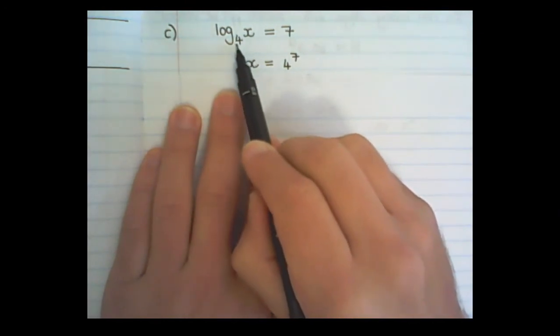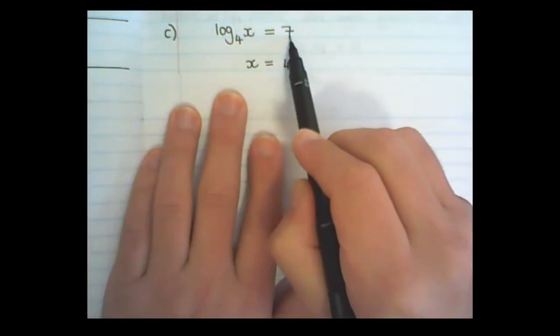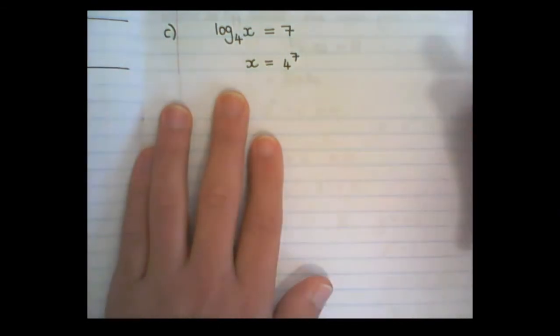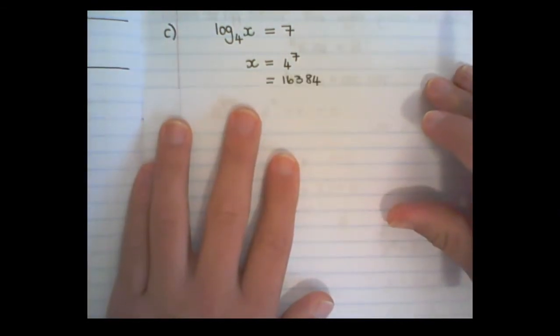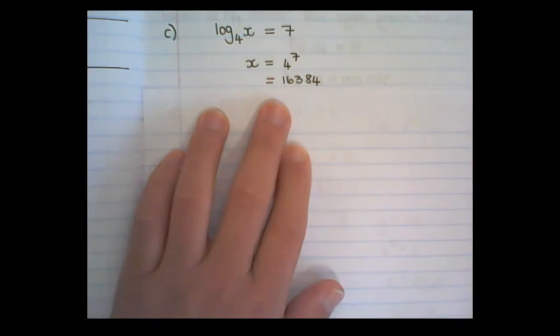So, simply put, this is the base, that is the exponent, then I have x alone. And 4 to the power of 7 is 16384.